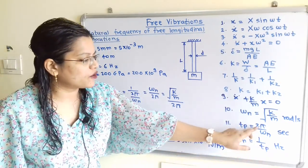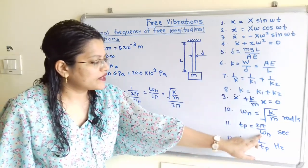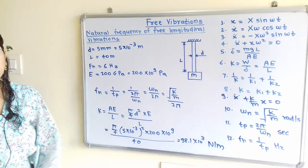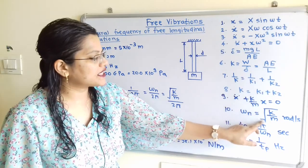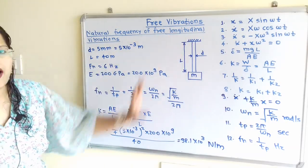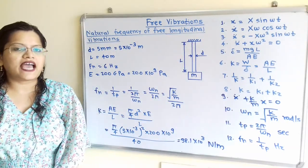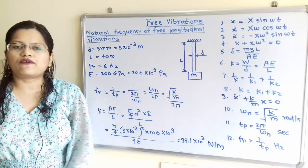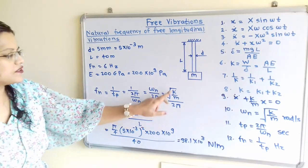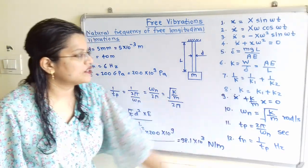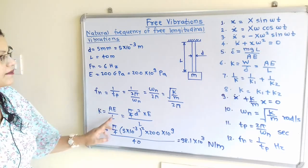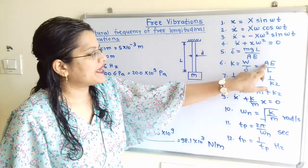For Tp we use the formula 2 pi by omega n. The value of omega n is not mentioned in the question, so omega n equals under root of k by m, where k is the stiffness. We consider the wire acting as a spring with stiffness k. The stiffness formula is k equals A times E divided by L.